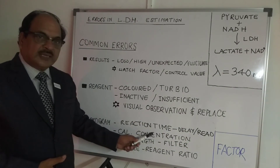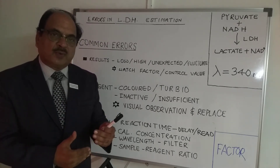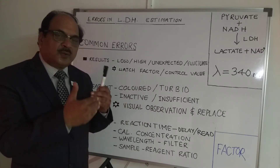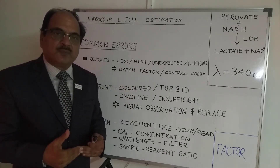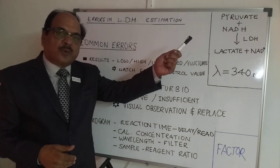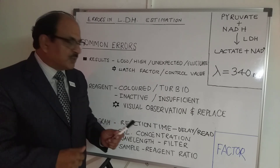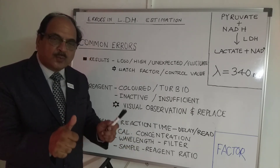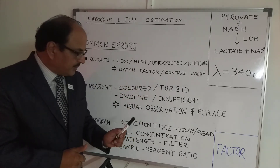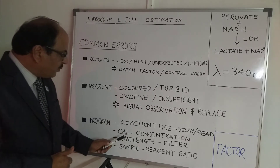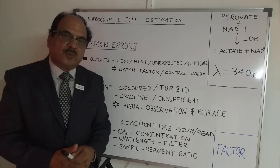Calibrator concentration is another important area prone to error. A common mistake is forgetting to update the calibrator concentration when switching to a new lot — if the previous calibrator value remains in the program, the factors and results will be wrong. Ensure that the current calibrator value for the new lot is correctly entered into the program.